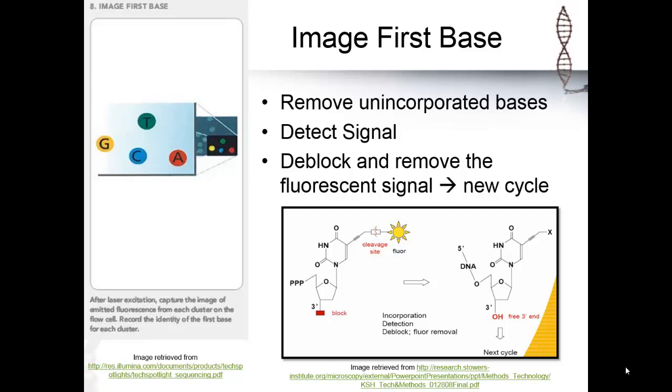The unincorporated bases, which are the bases that are not attached by a polymerase to one of the newly forming sequences in the clusters, are washed away. Then the machine can clearly detect the fluorescent signals that are left and record the base that has added to each of the clusters.